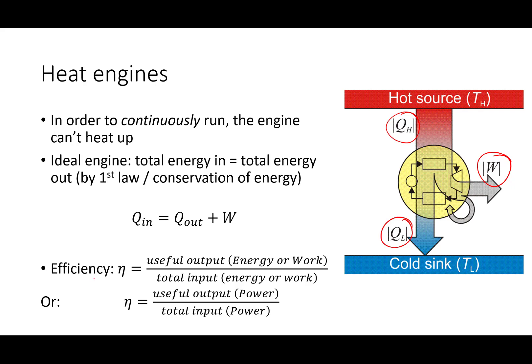The efficiency of a heat engine, or really any engine, is just the useful output over the total input. And for an engine, the useful output is the work that it does. And the input is going to be the heat that comes in. In this case, QN or QH. We can also talk about efficiency in units of power, useful output power over total input power, which would just be the power out, used to turn the wheels, or in producing useful work, over the input heat power.